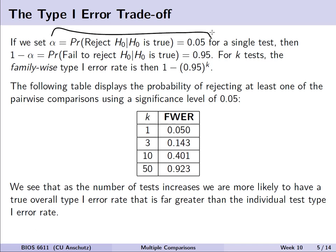We can formally state this trade-off. If we set alpha to be equal to 0.05 for a single test, then 1 minus alpha — the probability that we failed to reject the null hypothesis when it was actually true — equals 0.95. If we ultimately did k tests, the family-wise type 1 error rate would be equal to 1 minus 0.95 raised to the kth power. As we see in the table below, it will quickly grow from 0.05 on the marginal level to being drastically inflated.